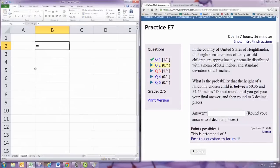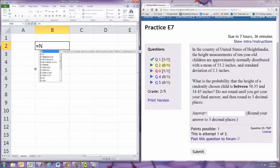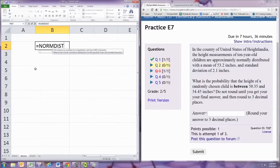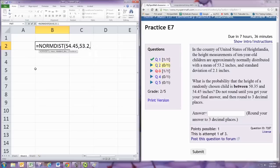That blue one is norm dist, and we would use the larger number, 54.45. The mean is going to be the same for both. The standard deviation is the same for both.